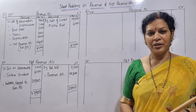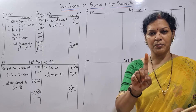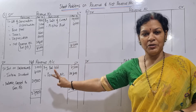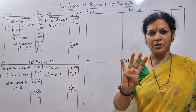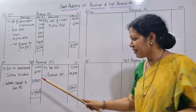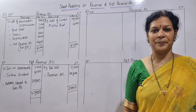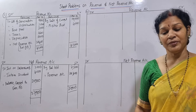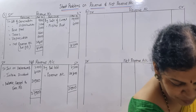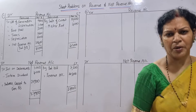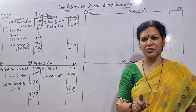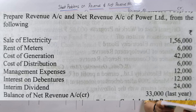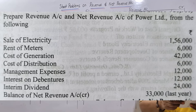In final accounts, four things are required: revenue account, net revenue account, capital account, and balance sheet. This 20,900 amount you write in the balance sheet. Clear? Now we will see the next problem. After my explanation, pause the video and you try to work it out, then check your answer with me.